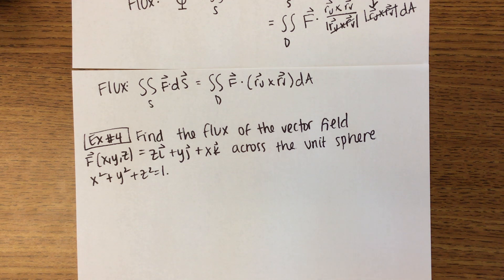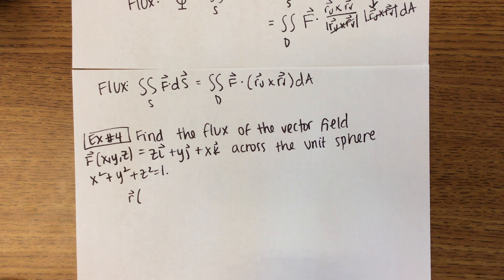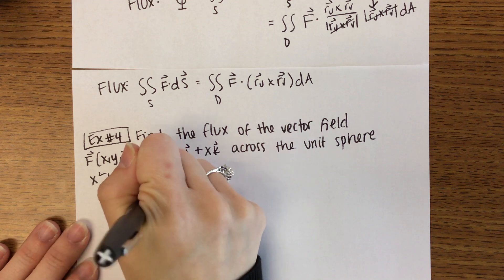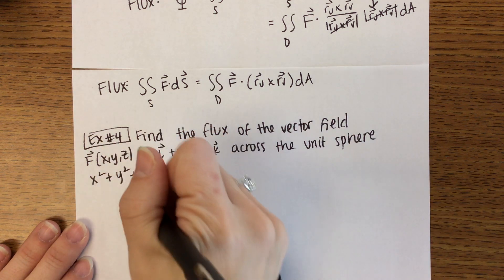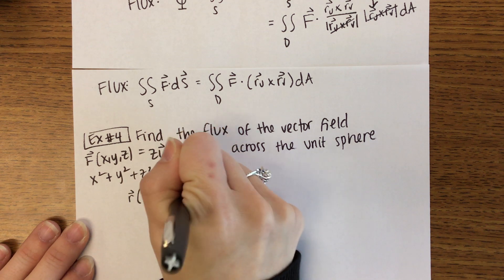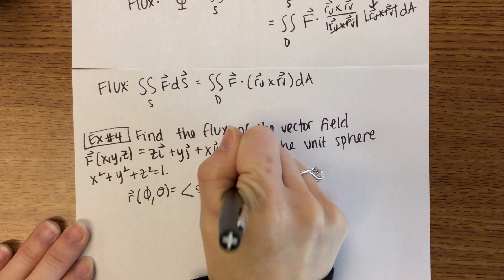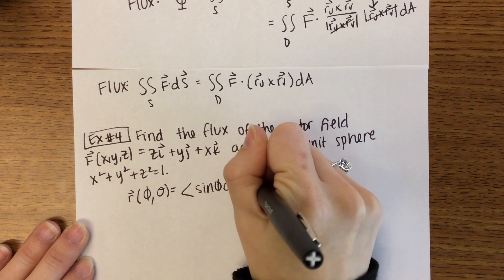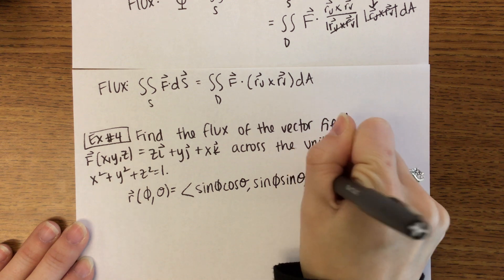We're going to have to start by parametrizing our surface — the unit sphere. We've parametrized this multiple times using spherical coordinates. R is going to be in terms of phi and theta: sine(phi)cosine(theta), sine(phi)sine(theta), cosine(phi).